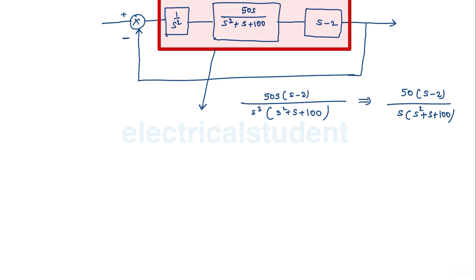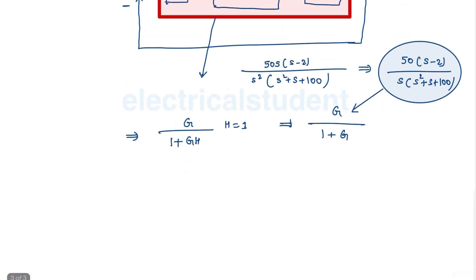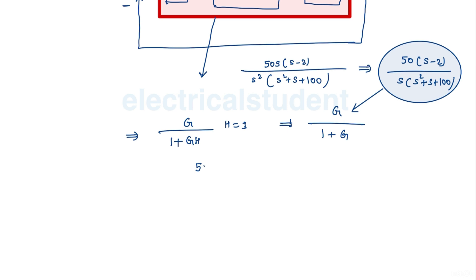It is clearly a unity feedback system, so the overall transfer function is G over (1 + G), where H equals 1. G is our derived expression, so we substitute it in to find the final answer.